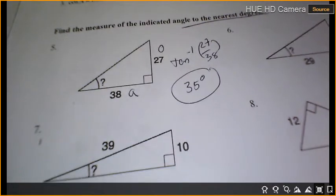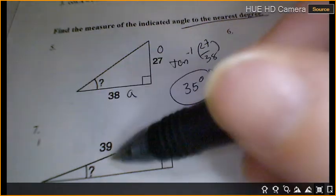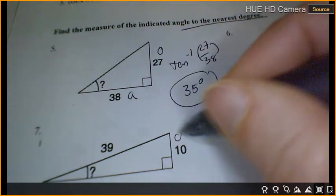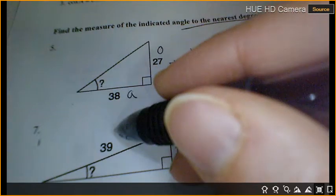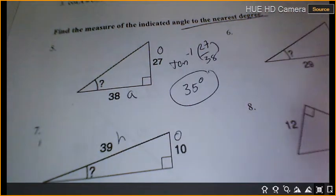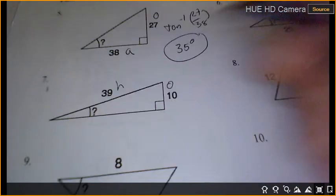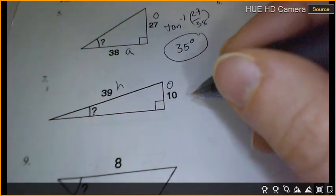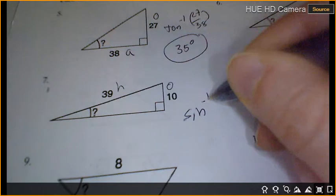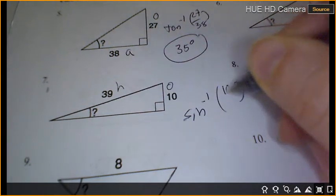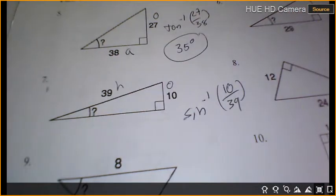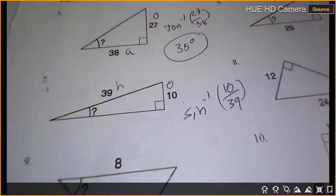Number 7. We're looking for 10 as the? Opposite 39 as the? So which trig function am I going to use? Sine. And I'm going to use sine or inverse sine? Inverse sine, because I'm looking for the? Angle. 10 over 39, so I'm going to hit trig, inverse sine. 10 divided by 39, and I get 15 degrees.